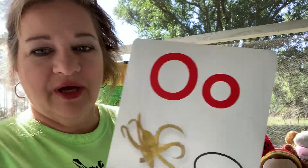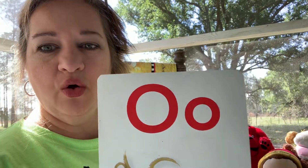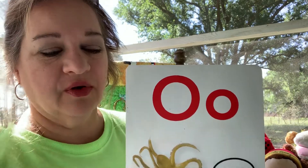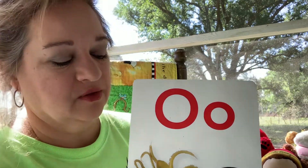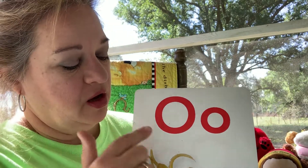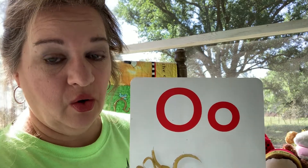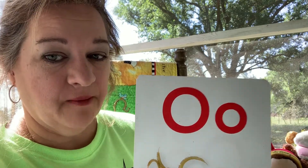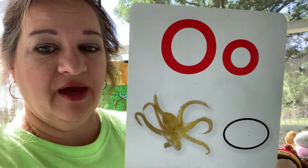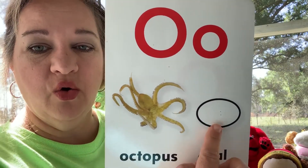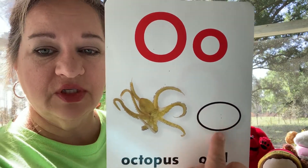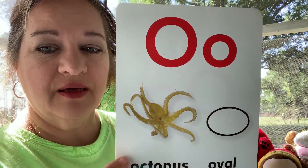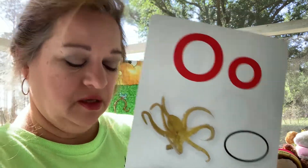We're up to letter O. O is a red letter — it's a vowel — which means it makes two sounds. O says its name: O (long sound), and it also makes a short sound: ah. So we have O as in oval, the shape, and ah as in octopus.